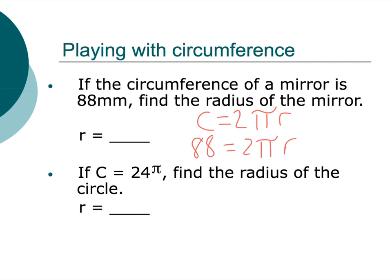Well, we can just divide 88. It would be 88 divided by 2π, so 44 divided by π is roughly 14. It's like 14.0056. So approximately, or we could leave it as 44 over π. I don't know why we would want to leave it like that, but that's what this is right here. Here it says if the circumference is 24π, find the radius of the circle.